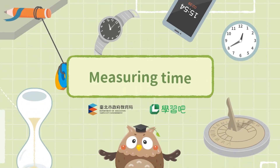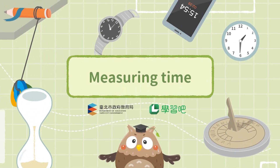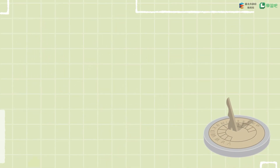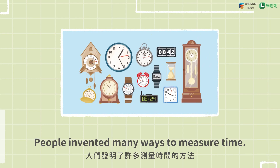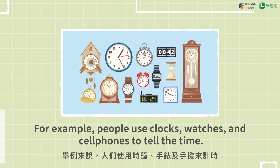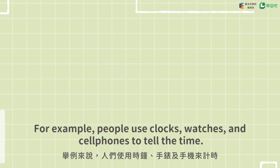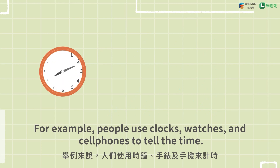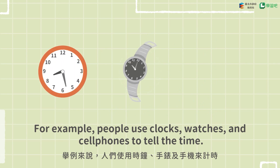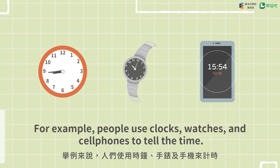Measuring Time. People invented many ways to measure time. For example, people used clocks, watches, and cell phones to tell the time.